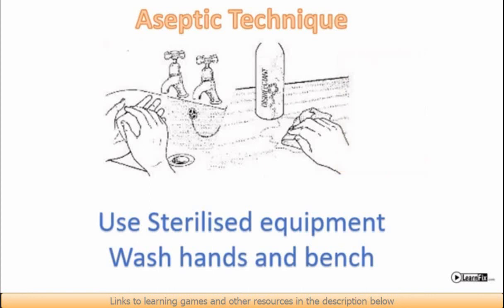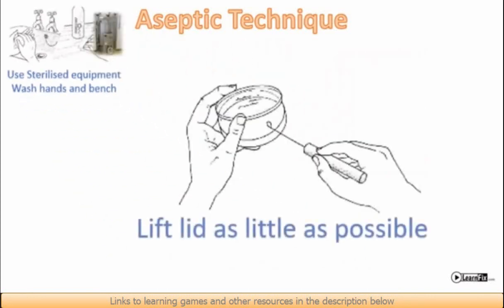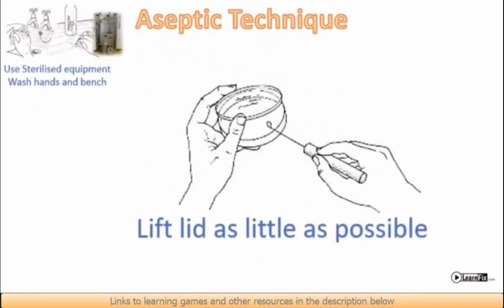When placing bacteria onto a culture medium, we need to expose the culture medium to the air and therefore airborne bacteria as little as possible. We do this by lifting the lid only a small amount and shielding the agar beneath it. We keep the lid over the base to act as a shield so that any fallen bacteria don't get onto the agar.